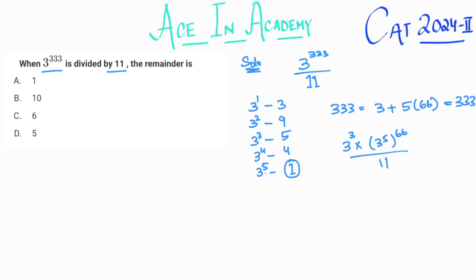So we know that 3 raised power 5, when divided by 11 gives the remainder of 1, and 1 raised power any power is 1 itself. So we can say that the remainder is when 3 raised power 3 is divided by 11. Now we just got that it is 5. So we can simply say that when 3 raised power 333 is divided by 11, the remainder will be 5.